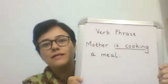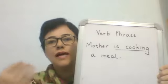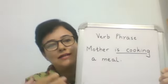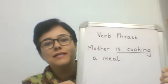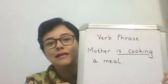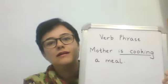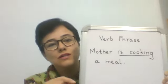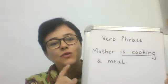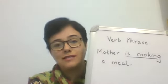The second type is a verb phrase. It is called a verb phrase because it has a verb — and sometimes a helping verb — in it. A verb is a word that shows action. For example, in 'Mother is cooking a meal,' the phrase is 'is cooking.' It is a verb phrase because it shows action — cooking is the main verb and 'is' is the helping verb.